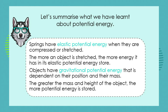So let's summarize what we've learned. Springs have what we call elastic potential energy when they are compressed, squashed, or stretched — and the more an object is stretched, the more energy it has in its elastic potential energy store. Objects also have something called gravitational potential energy that is dependent on their position — in other words, their height — and their mass. The greater the mass and the height of the object, the more potential energy is stored.